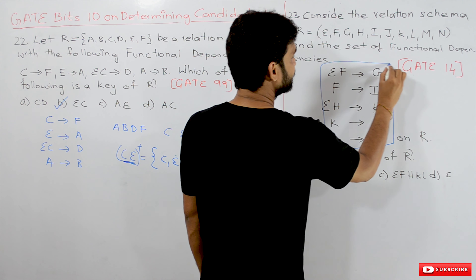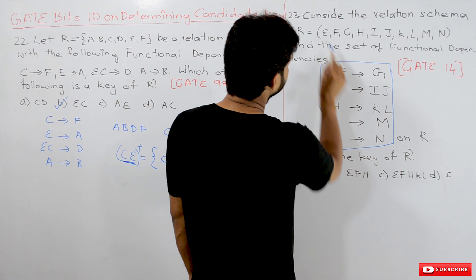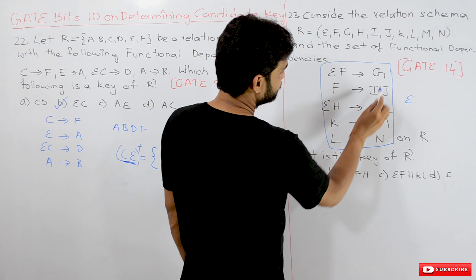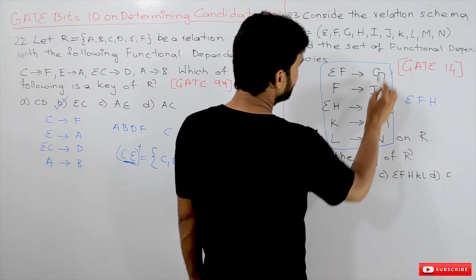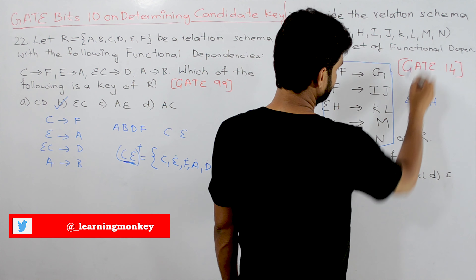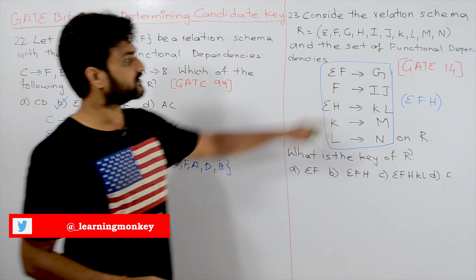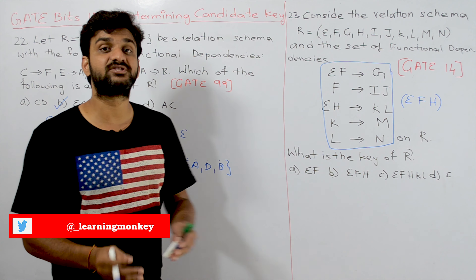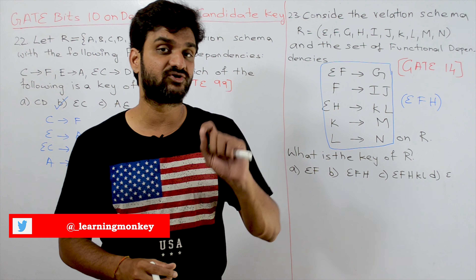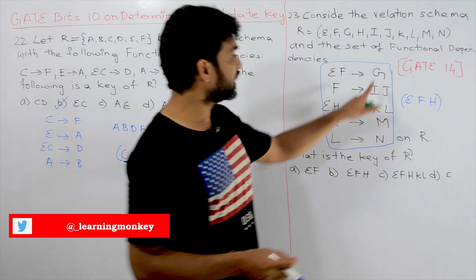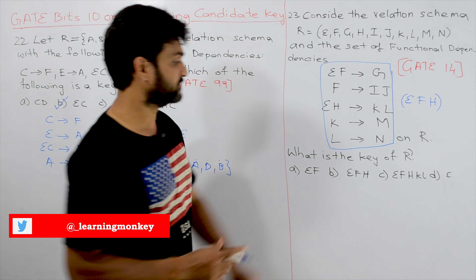From the given functional dependencies of the second problem, the attributes not present on the right-hand side are E, F, and H. Every combination we take to find the closure must include E, F, and H. Without E, F, and H, they can never be derived, so they must appear on the left-hand side.